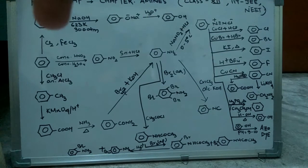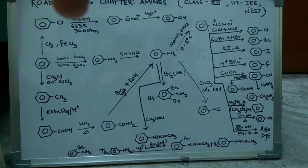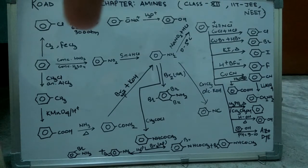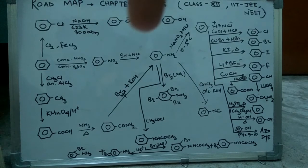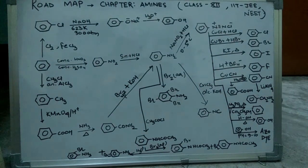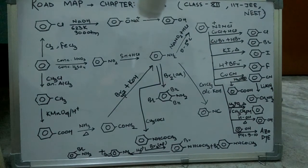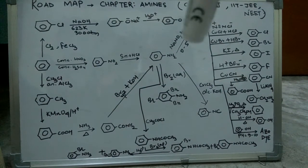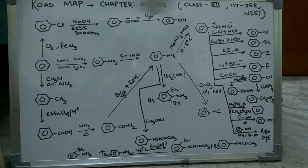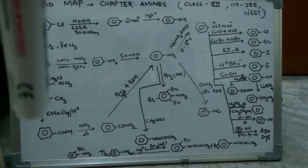Applying NaOH at 623 Kelvin and 300 atm, we get the side group as O minus Na plus, which upon hydrolysis as we can see here, we get phenol.